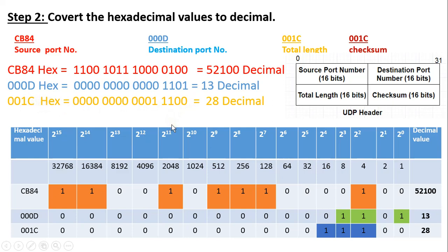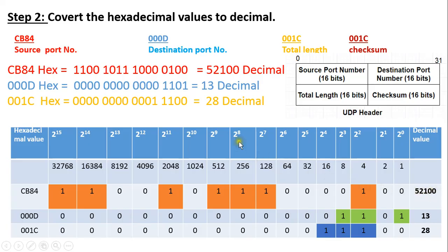Now we need to convert all these hexadecimal digits to decimal. CB84 in binary is 1100 1011 1000 0100. The corresponding binary weights are 2^2 + 2^7 + 2^8 + 2^9 + 2^11 + 2^14 + 2^15, which gives 32768 + 16384 + 2048 + 512 + 256 + 128 + 4, equal to 52100 in decimal. So the source port number is 52100 in decimal.